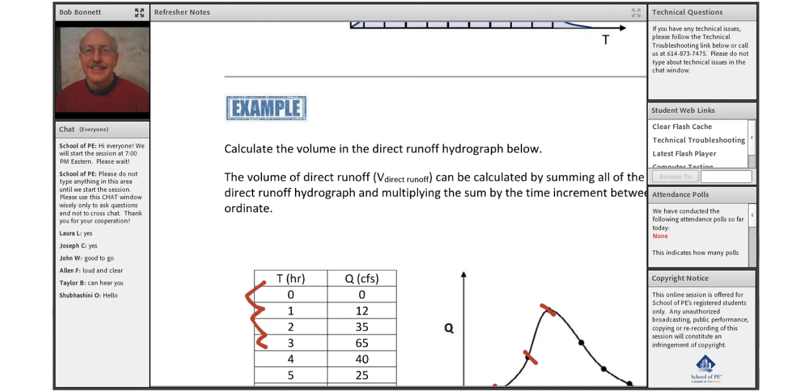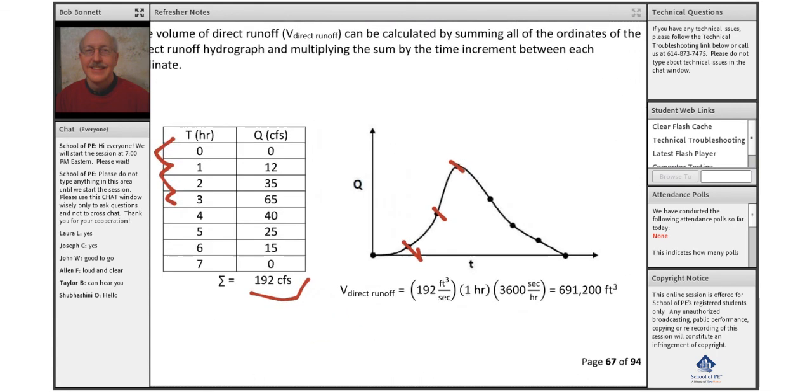Here is our equation: 192 cubic feet per second. That is a flow rate, which has a time component in the denominator. We got to get rid of that time component because we're looking for volume. Our answer needs to be in cubic feet. So we multiply times the time increment in which the data was gathered. In this case, it was one hour, and then we adjust for our seconds, and we come up with the volume.